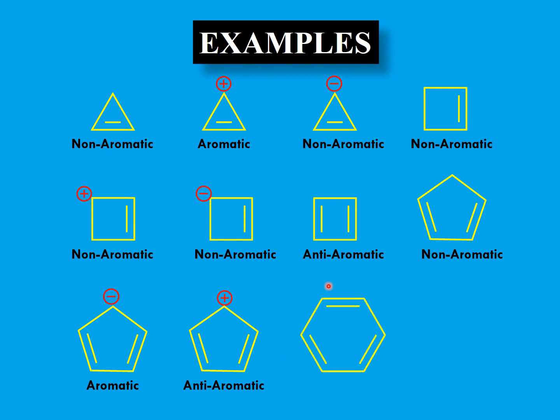The well-known benzene molecule has six carbons, three double bonds, and six electrons in conjugation forming a closed loop. Because 6 is a Hückel number (4n+2), benzene is an aromatic molecule.